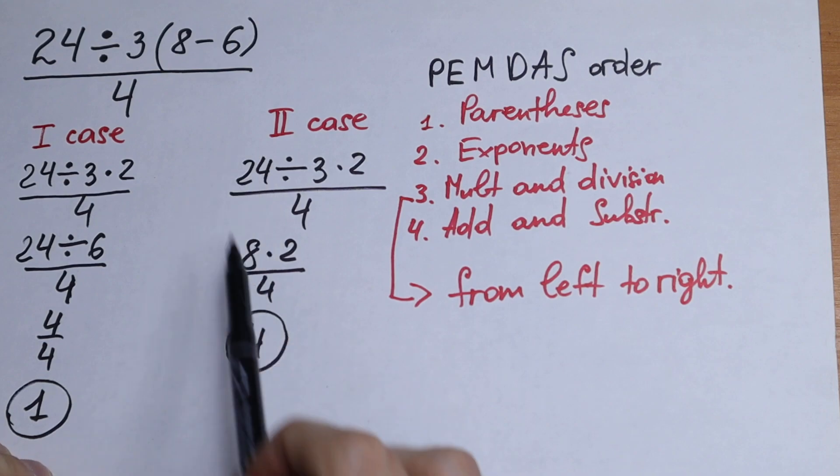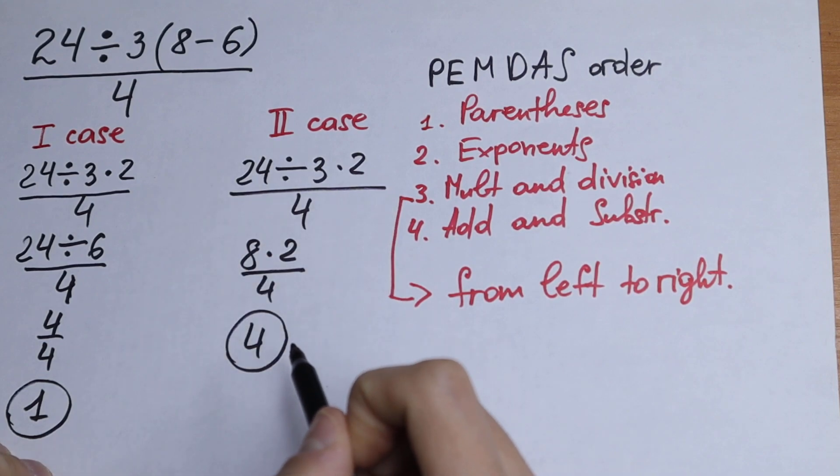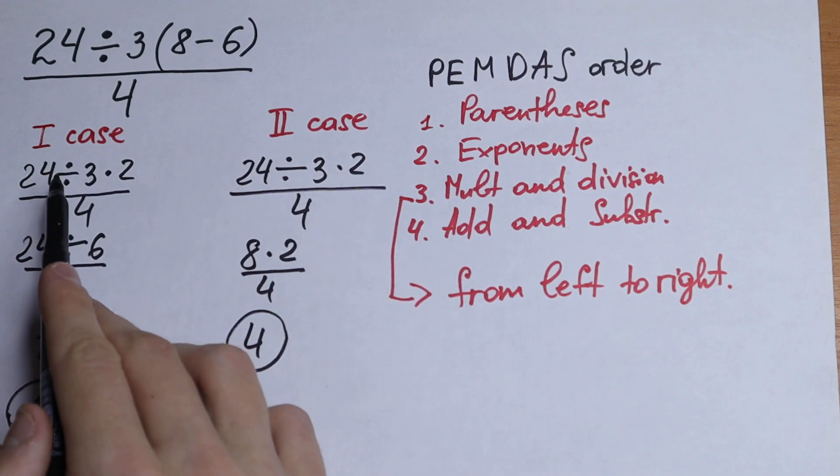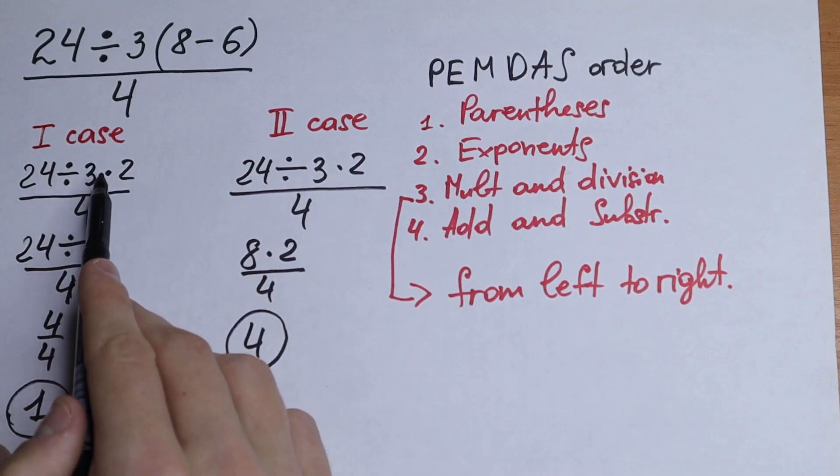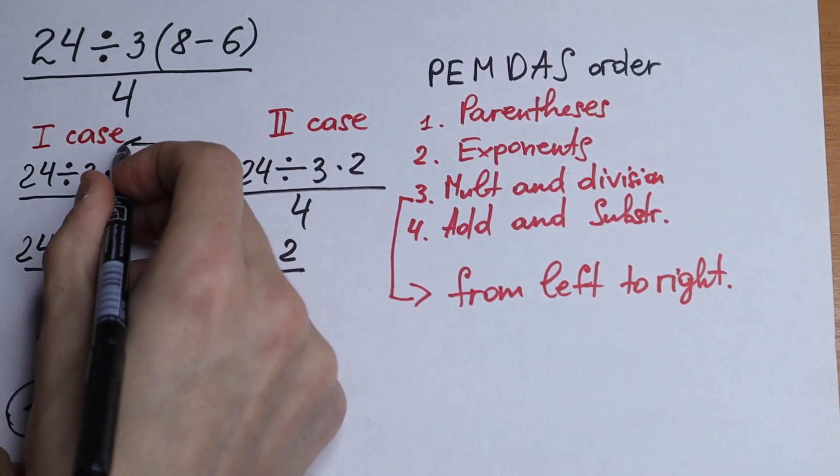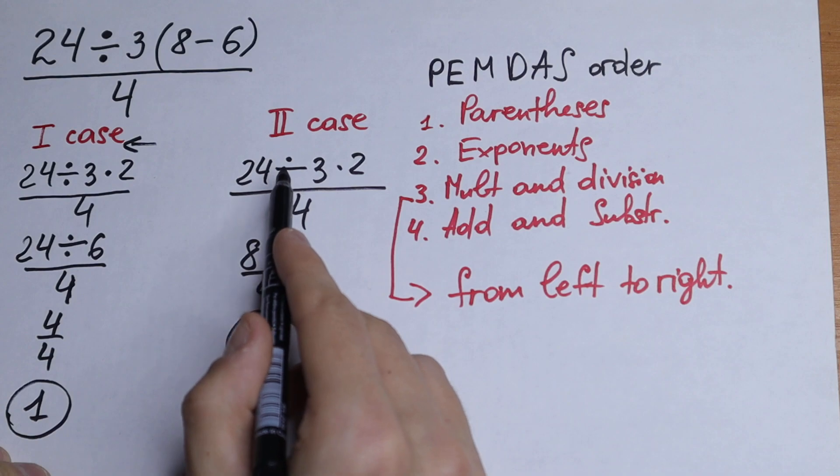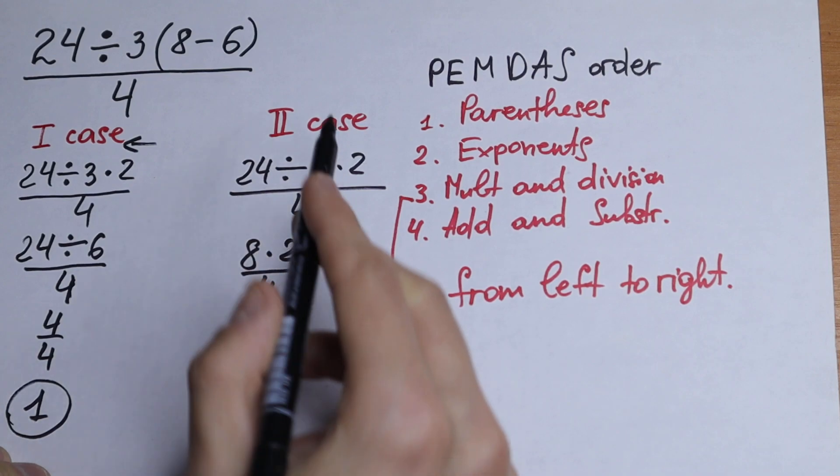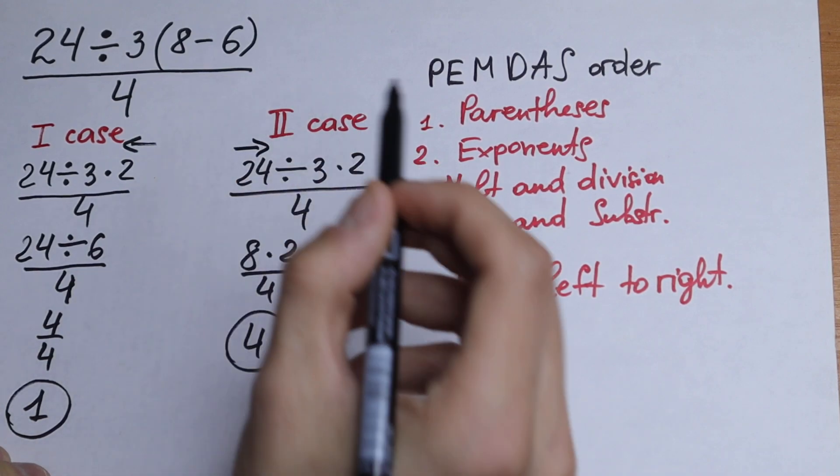So this will be our second case. It will be a correct case. Because right here, multiplication at first, but from right to left. From right to left. Right here, we divide from left to right.